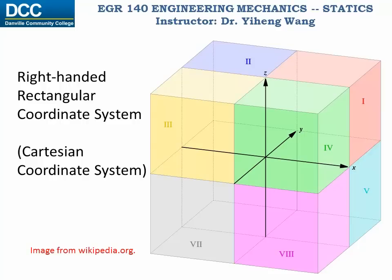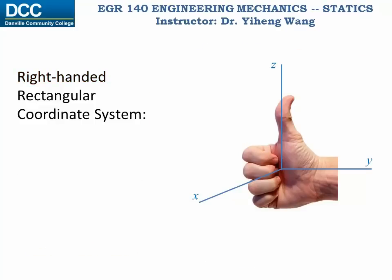The reason why this is called a right-handed coordinate system is because the positive directions of the three axes follow the right-hand rule. This means that if you roll the four fingers in your right hand from the positive x direction towards the positive y direction, as shown in this image, then your thumb will point towards the positive z direction.